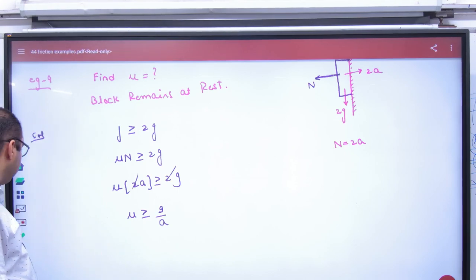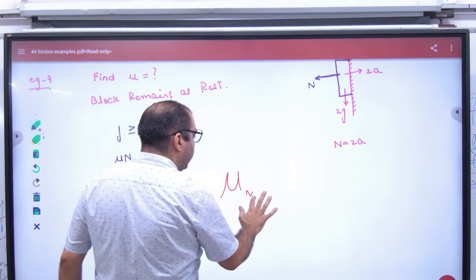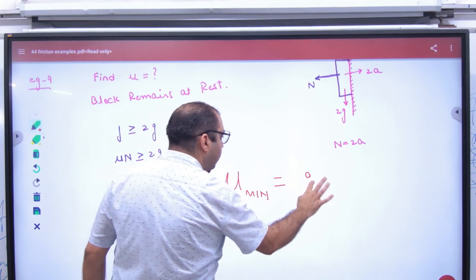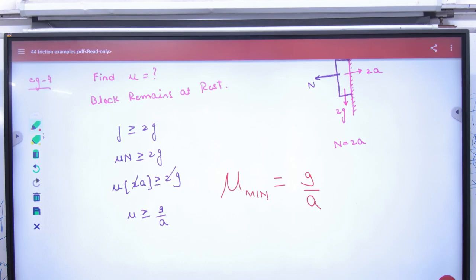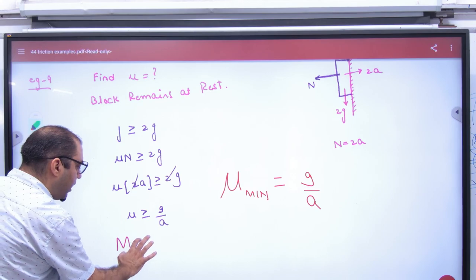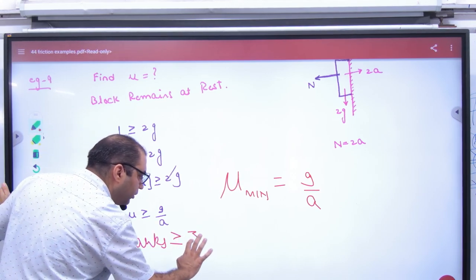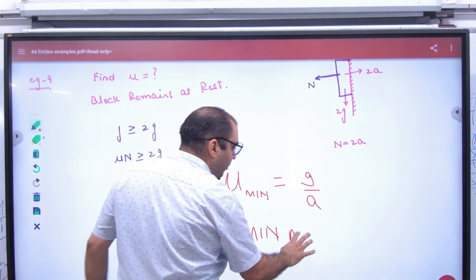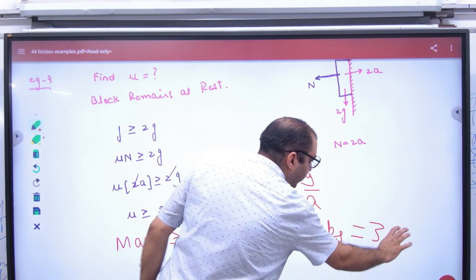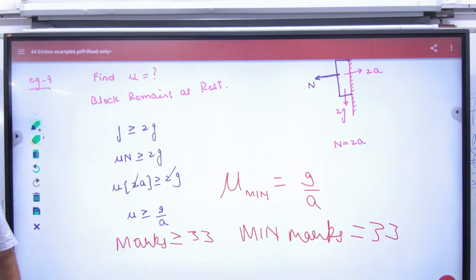Okay, he can ask this too. What will the minimum value be? G by A. How do you understand? Because equality will break. Look, my maths marks greater than or equal to 33. So my minimum marks how many? 33. So inequality will break and what will it be? 33. I don't want to fail you. That's why I say maths, I'll tell chemistry, I'll tell physics.